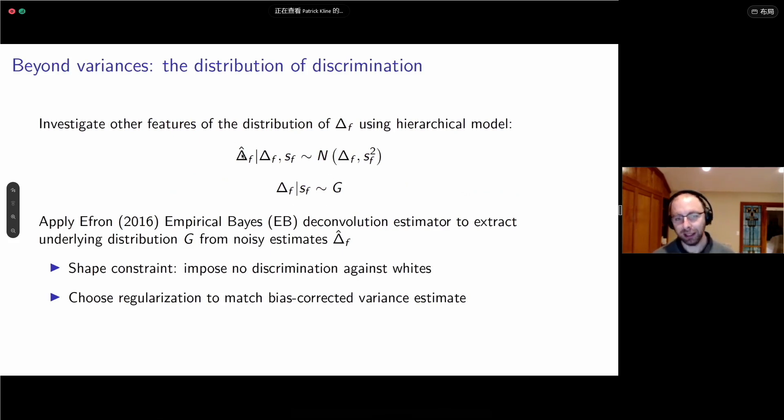We're going to apply a deconvolution estimator proposed by Brad Efron. The idea is we have a hierarchical model. We've got a noisy signal of the bias delta-hat_F. But there's some latent true level of bias delta_F without the hat. And then S is our standard error. We're going to assume by the central limit theorem, we've got a thousand apps to every company, we invoke a CLT and say we've gone to a normal distribution. Then we're going to assume these true bias levels are IID draws from some distribution G. We're going to try to estimate that G. We do that imposing, in the case of race, a shape constraint that there's no discrimination against whites.